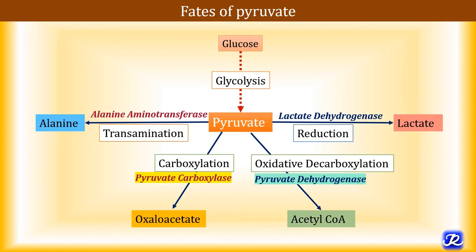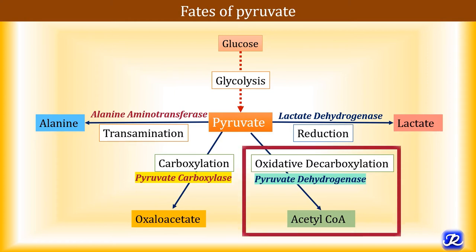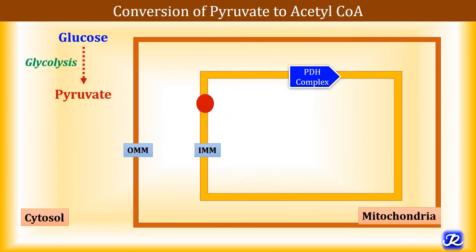Another fate is transamination — pyruvate is transaminated to alanine by the enzyme alanine aminotransferase. We are going to focus on the oxidative decarboxylation of pyruvate, in which pyruvate dehydrogenase complex plays a very important role in converting pyruvate to acetyl-CoA.